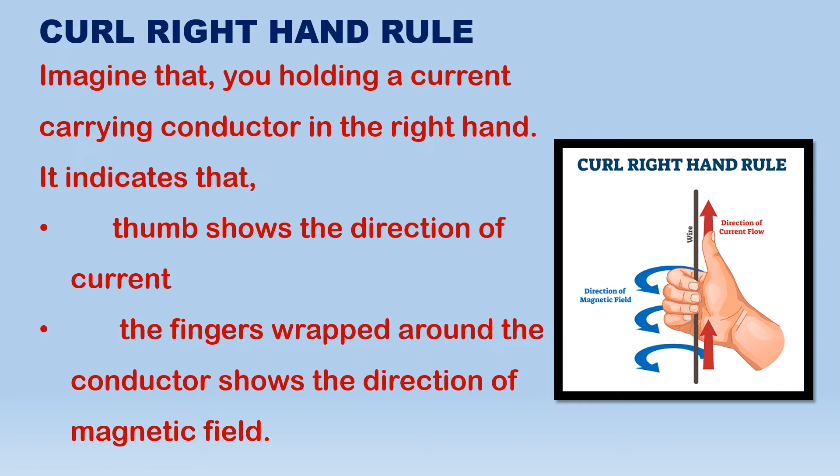So this is the right hand rule: if you hold the current carrying conductor, the thumb indicates the pathway of current, and the remaining fingers wrapped around indicate the direction of the magnetic field. This is the right hand thumb rule.